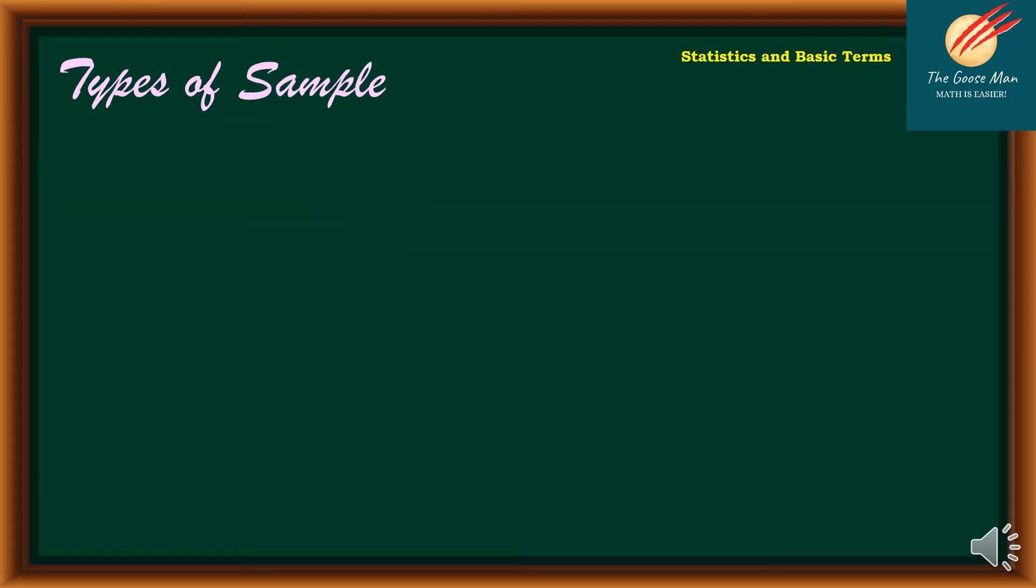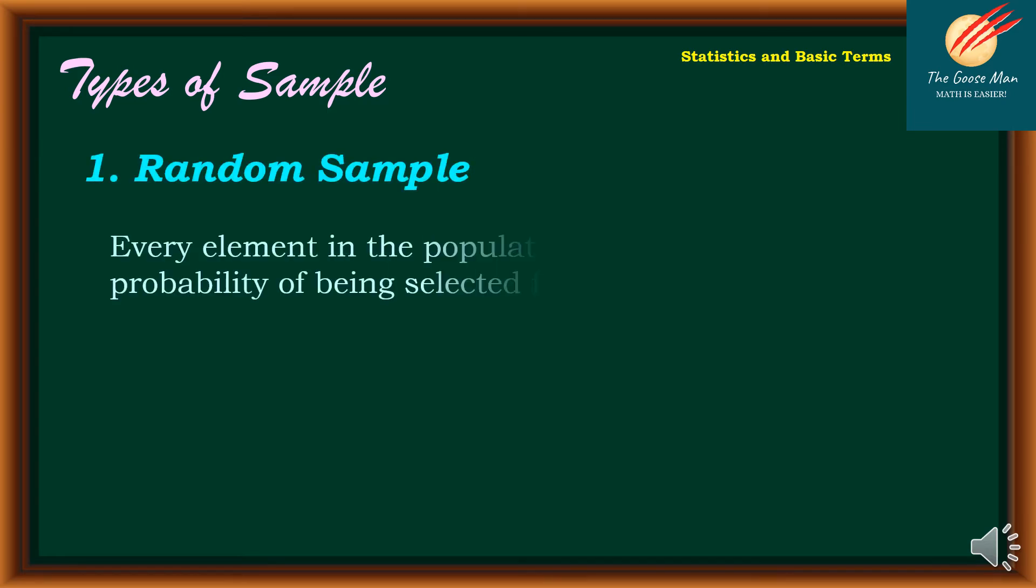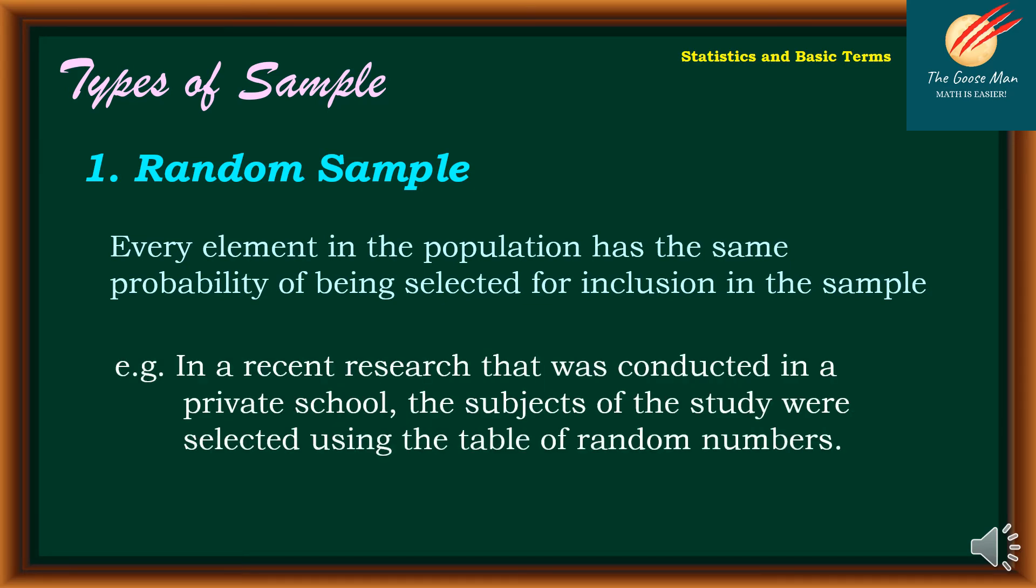Now that you know the difference between population and sample, let's move to the types of sample. The first is random sample, defined that every element in the population has the same probability of being selected. For example, in a recent research at a private school, subjects were selected using a table of random numbers.